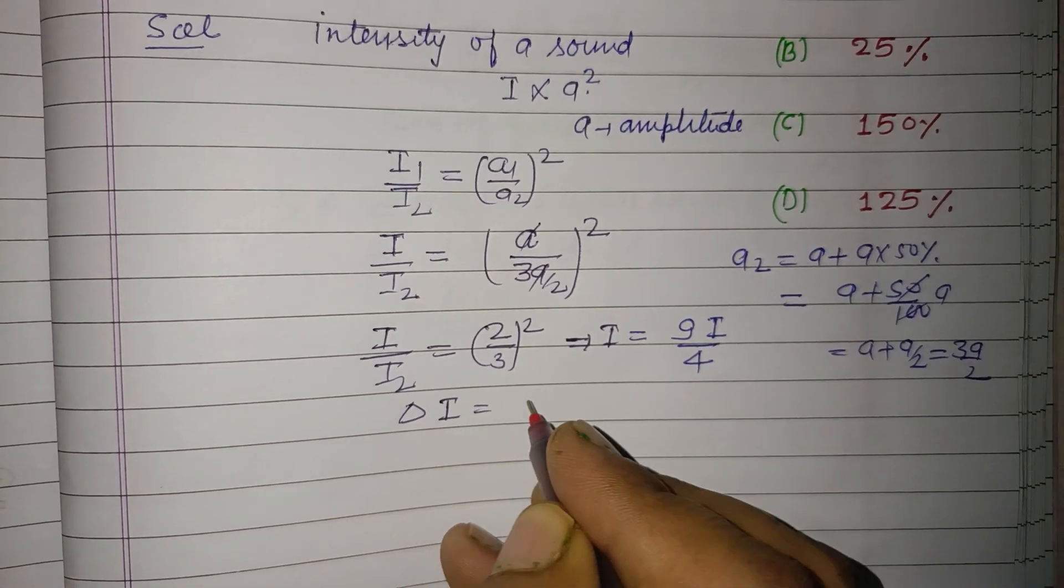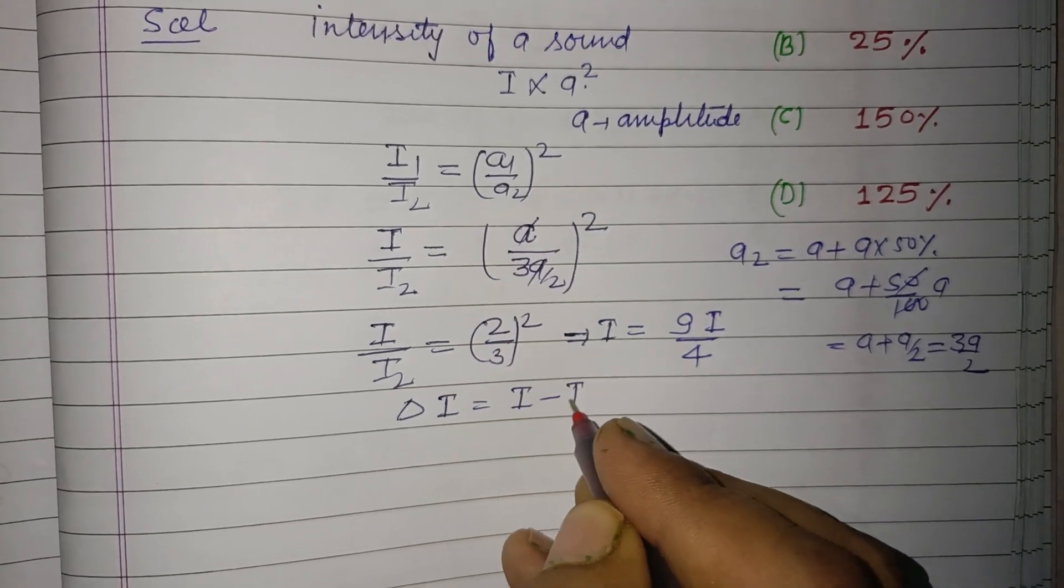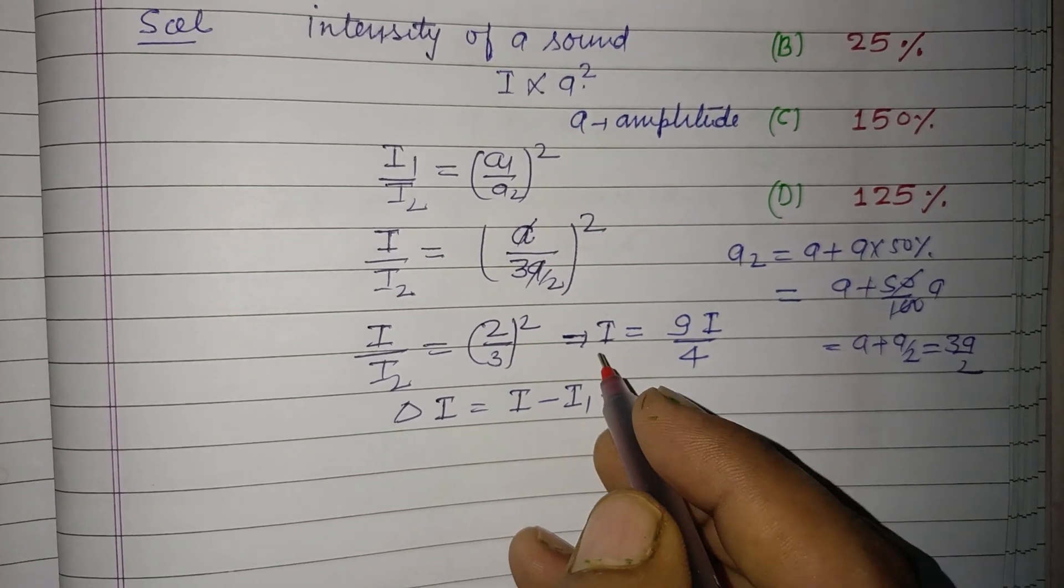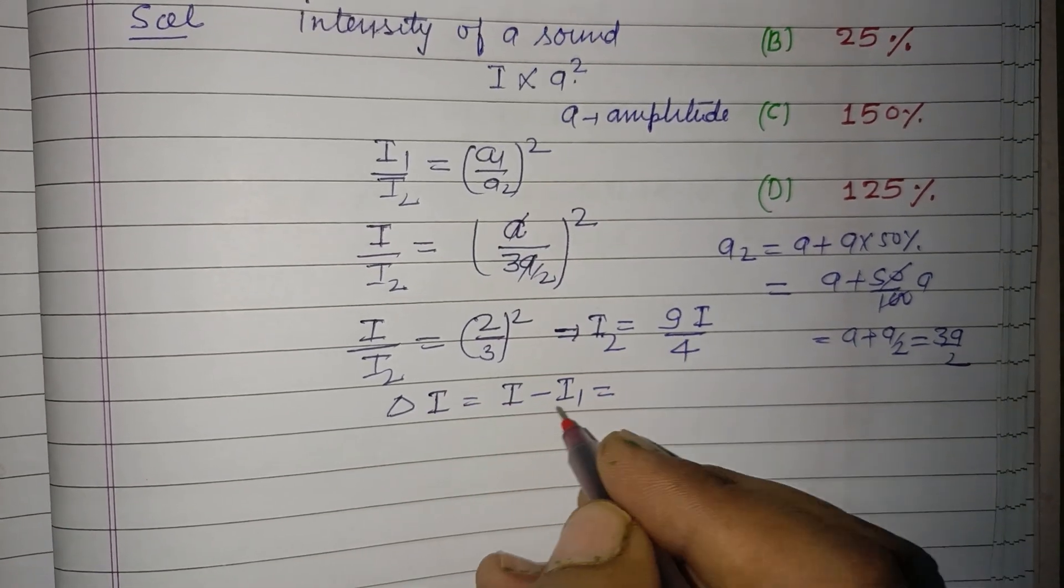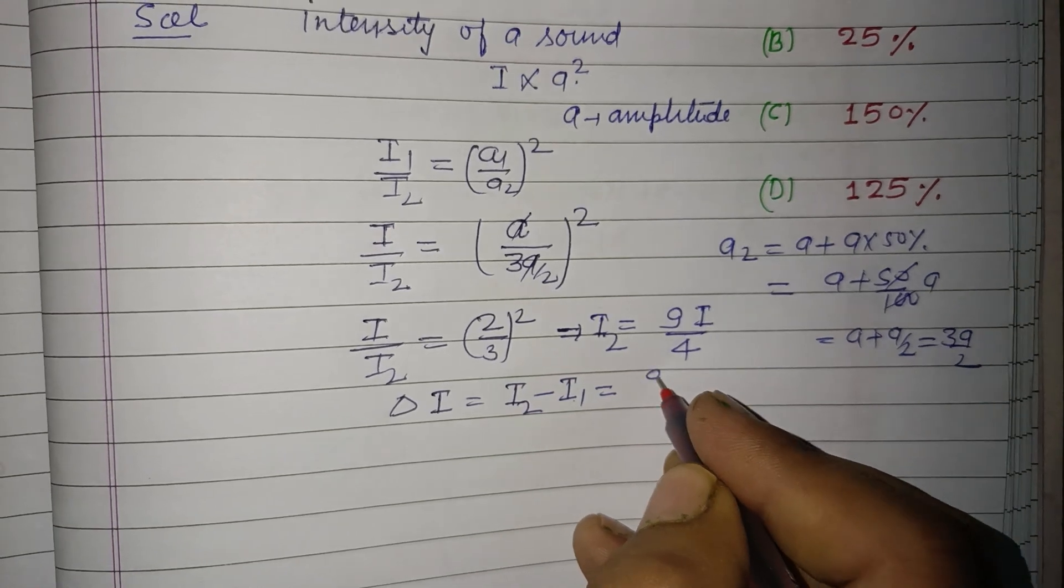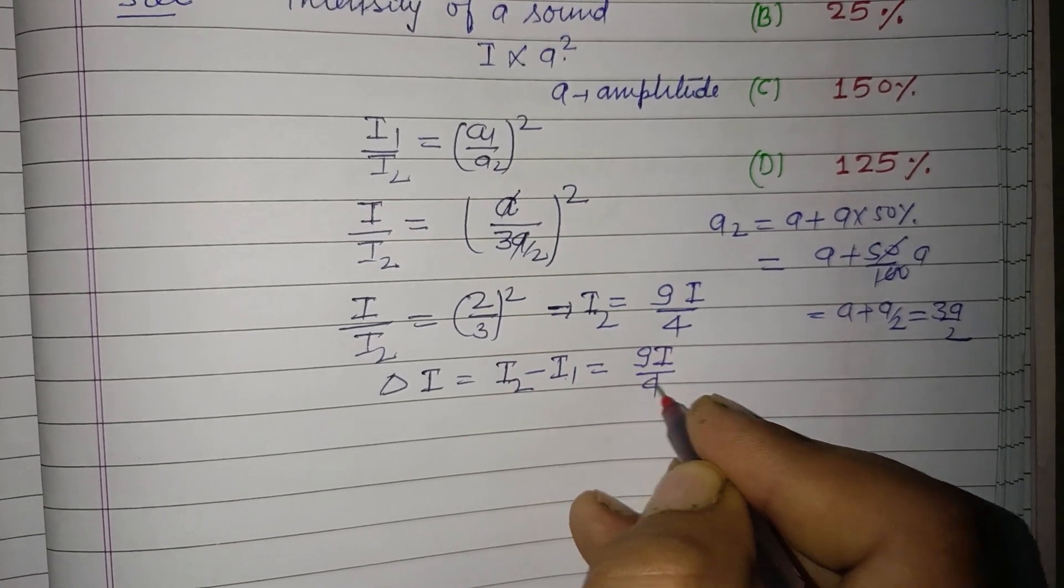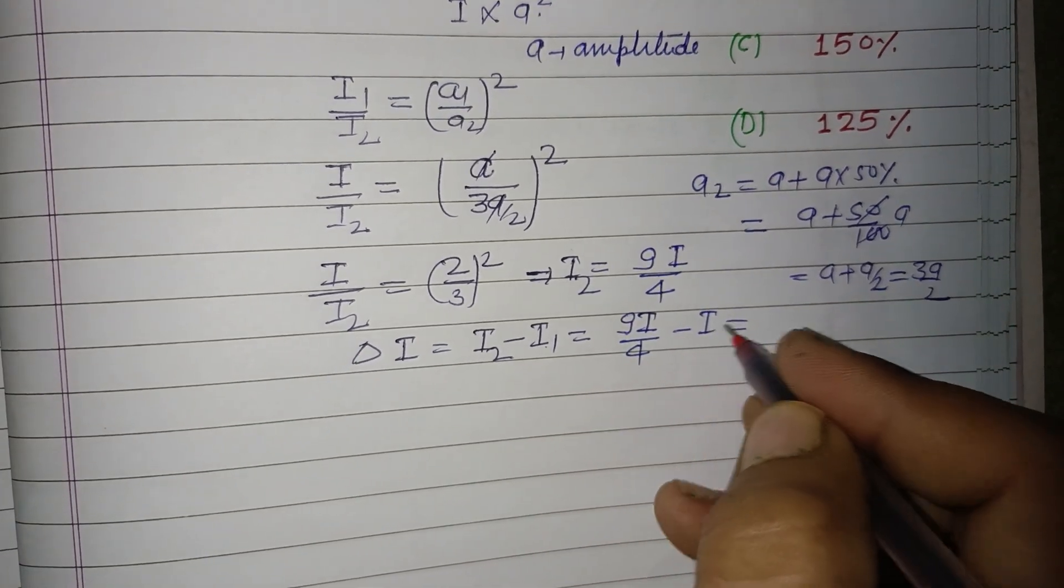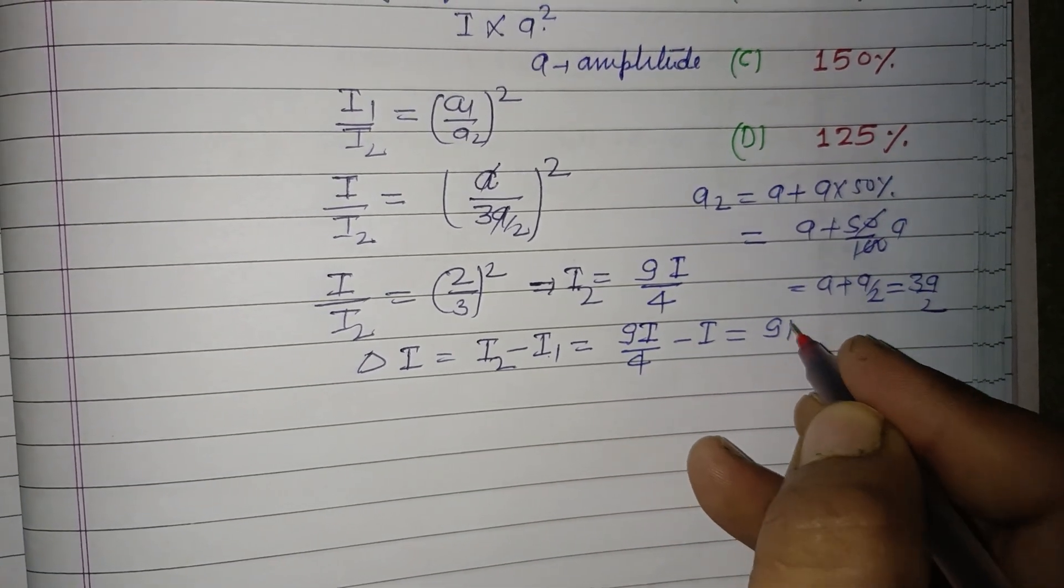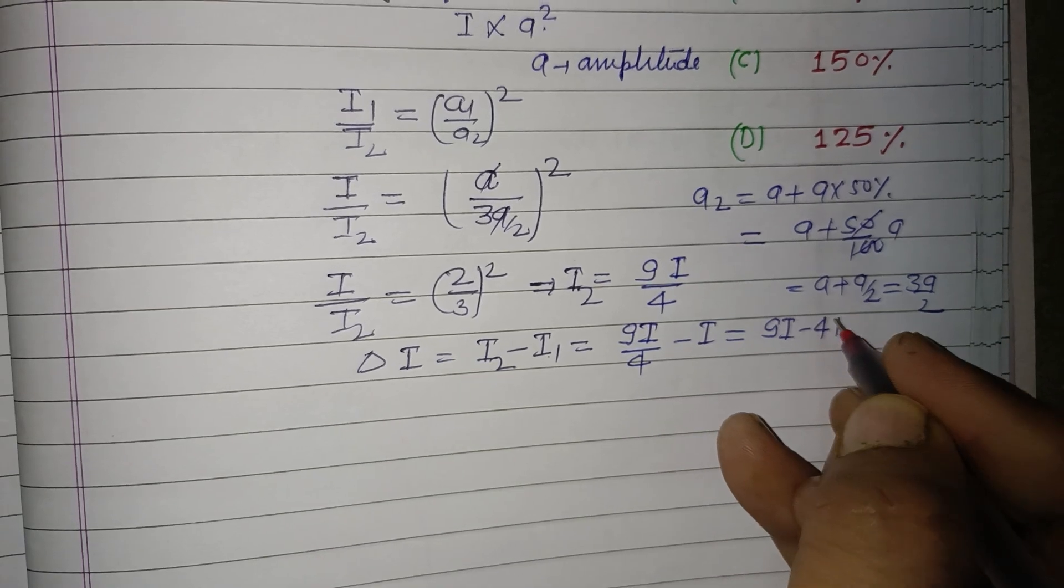Delta I equals I2 minus I1. I2 is 9I upon 4 minus I1 is I, so this is 9I minus 4I upon 4, that is 5I upon 4.